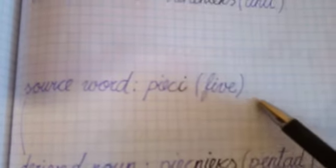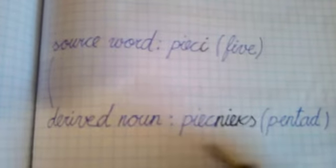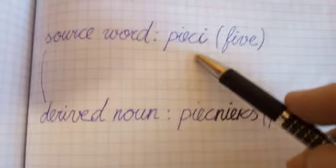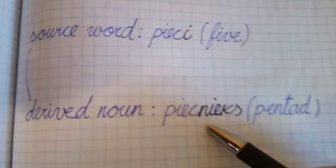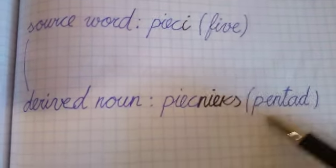Next source word, pietci, five. Derived noun, pietznieks, the number five. Remove ending and add ending inieks, pietznieks, the number five.